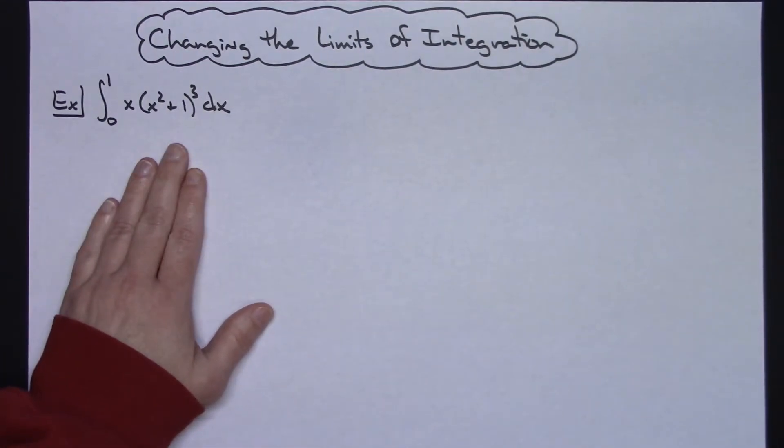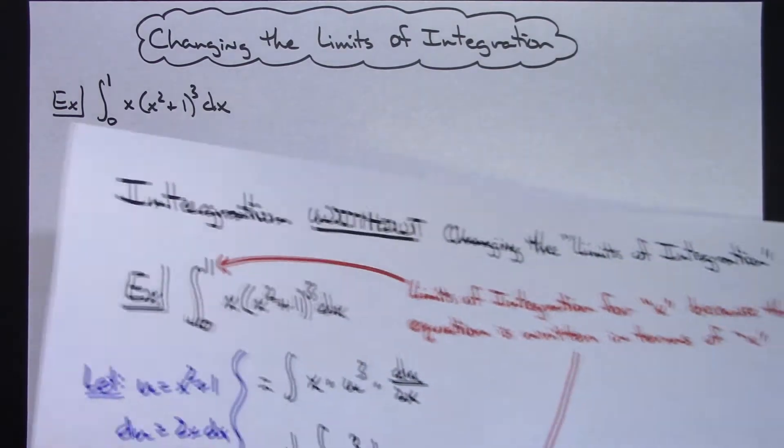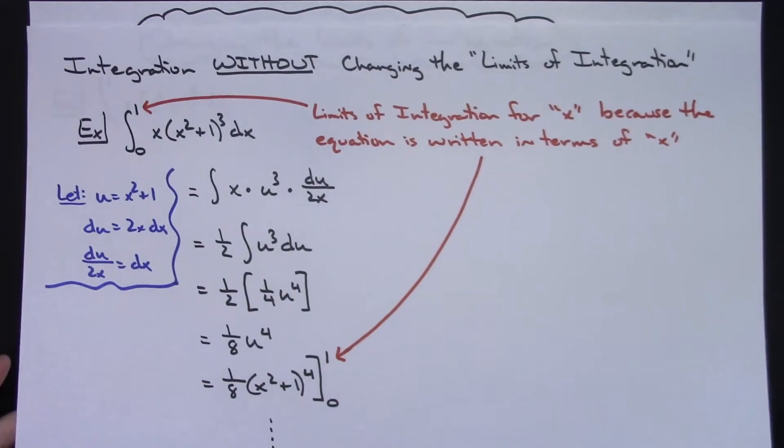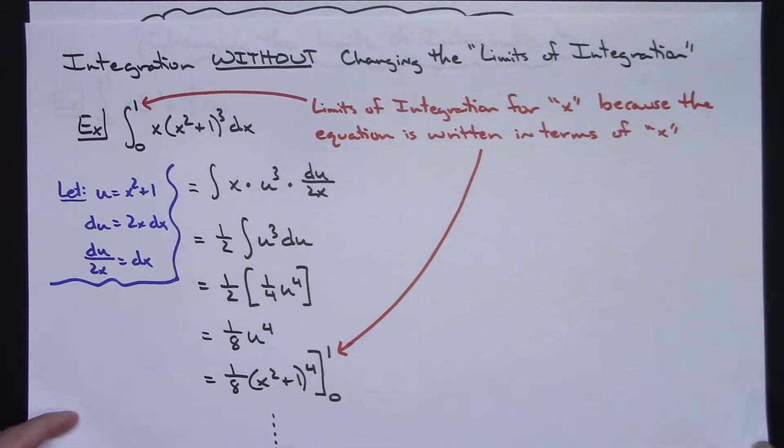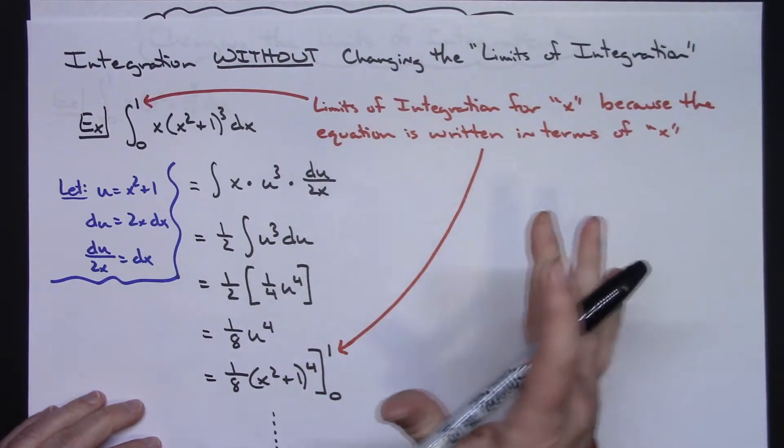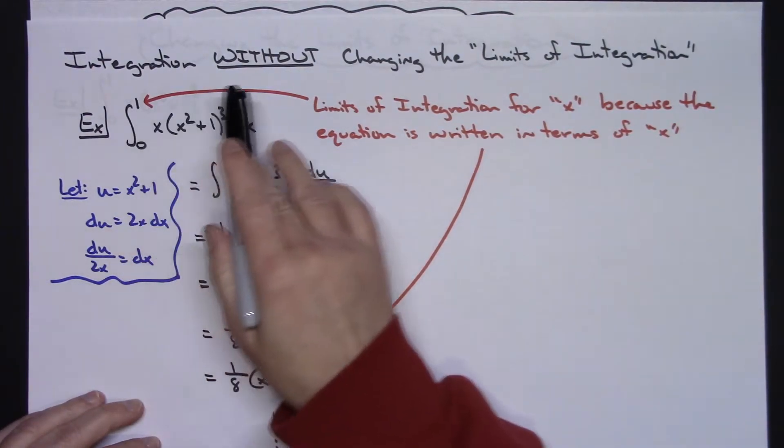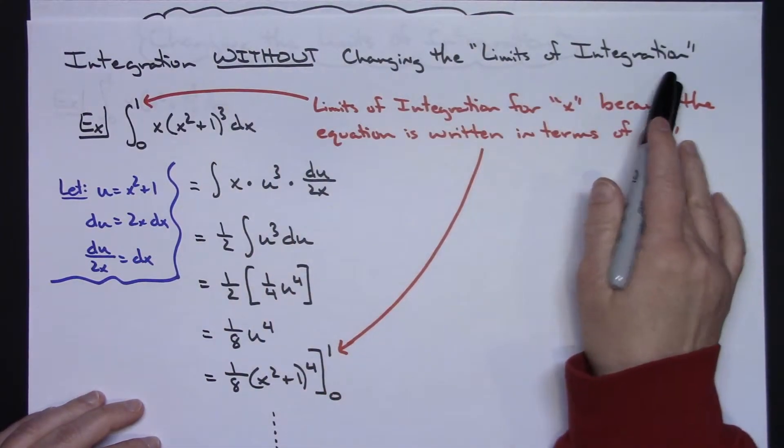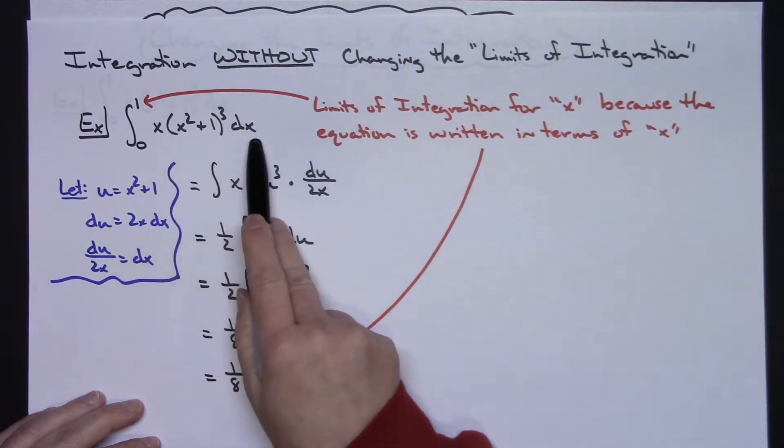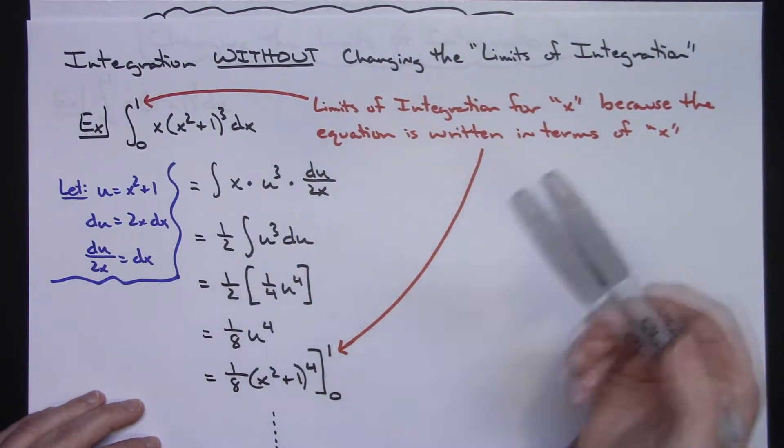Before I actually work through an example of how to go about changing those limits of integration, I want to look at an example where it has not been changed. This is an example of integration without changing the limits of integration. So let's say we had an integral here that we were trying to evaluate.